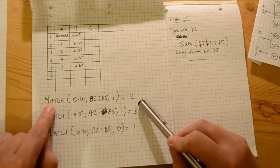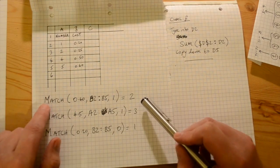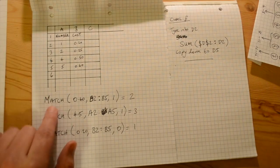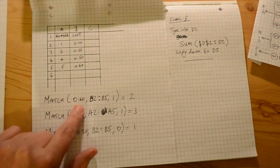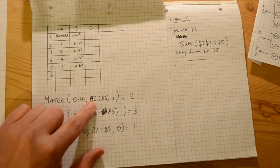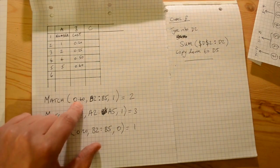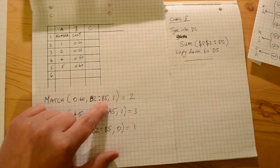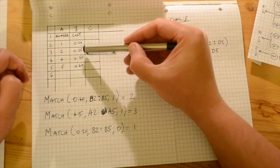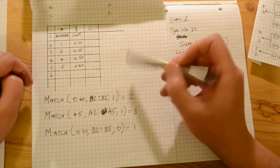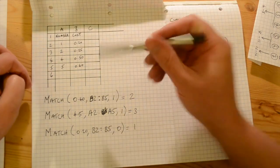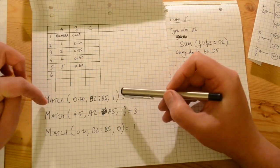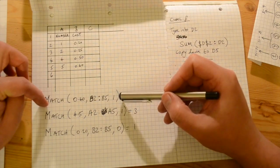The MATCH function lets you find an entry close to the one you put in. For example: MATCH(0.4, B2:B5, 1). Here 0.4 is the value we're looking for, B2 to B5 is the range we're looking in, and the match type is 1. Unfortunately 0.4 isn't actually there, but with match type 1 this function gives you back the row position within the selected area.